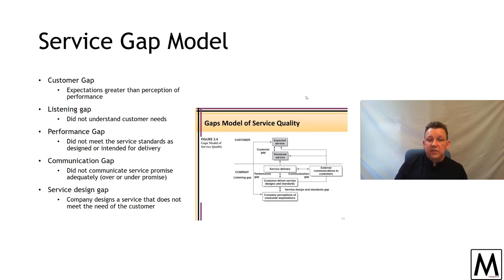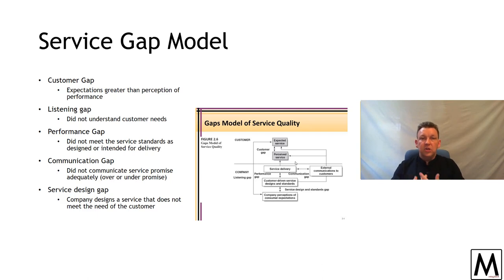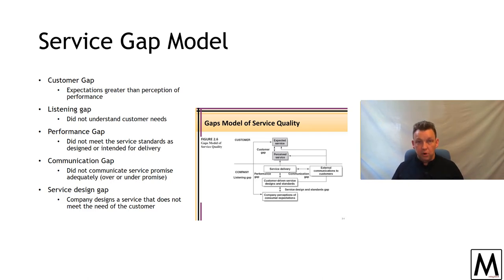The second model is the service gap model — just a quick highlight. This is one of the theories you'll deal with a lot in the services marketing subject. It provides a very good way of handling the manufacturing and performance of services at a full theoretical framework based around five gaps. It starts from the gap between what we expected and what we perceived, then asks: how did we get to that gap? Did we understand the customer needs? Did our service standards meet the requirements? Did we communicate a realistic promise for our services? And did we design a service that fit the need of the customer?